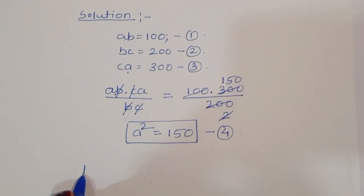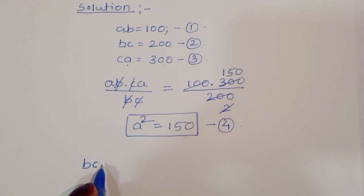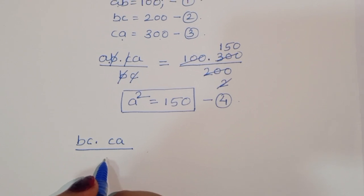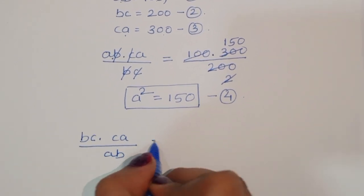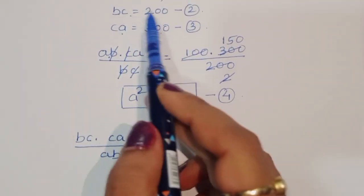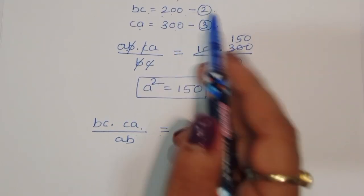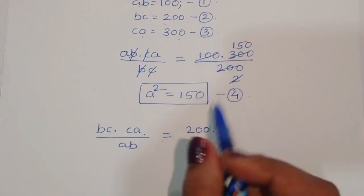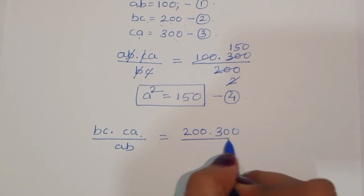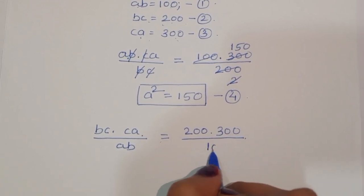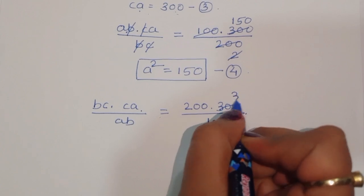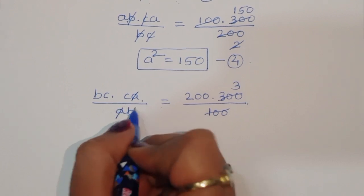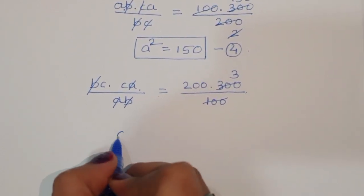Again, we can compute BC times CA divided by AB. BC times CA divided by AB equals 200 times 300 divided by 100, which gives 600. Here a cancels from a and b cancels from b, so c squared equals 600.